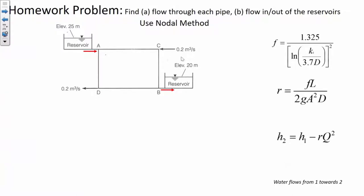Using the fully turbulent flow equation for the Jain equation, if we're assuming during the first iteration that things are fully turbulent — what you need to find on this problem is the flow rate through each pipe and then the flow in and out of the reservoirs. To solve the problem, you have to start by assuming the flow direction. We've got junctions A, B, C, and D.